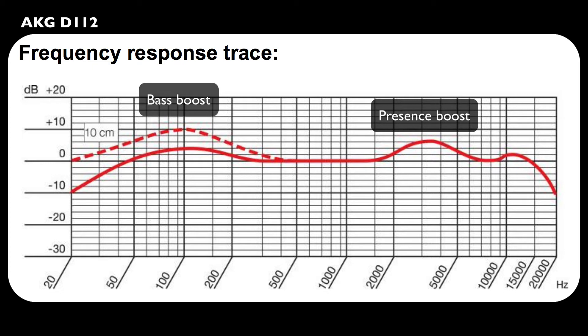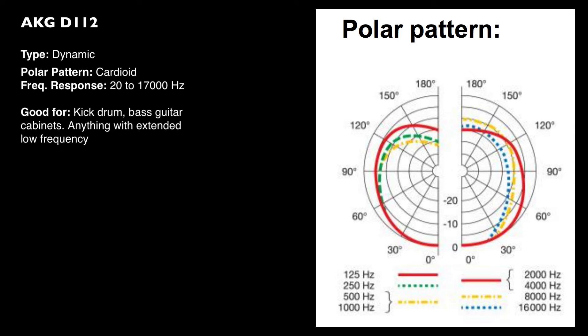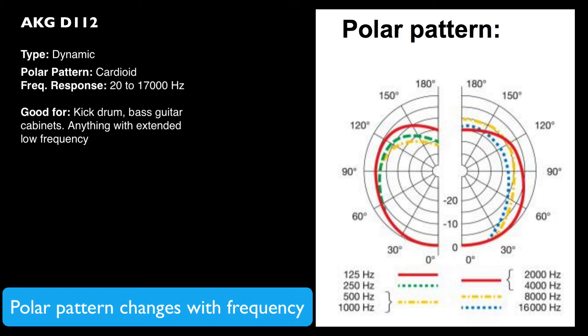If we look at the polar pattern for this mic, it's a cardioid pattern, picking up mainly in front of the microphone and not to the rear. You can see the colored lines show its directional characteristics at different frequencies, and this is one of the things about microphone polar patterns: they are not uniform across all frequencies. You tend to find that microphones become more directional as they get into their higher frequencies.